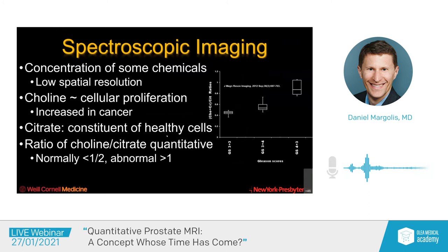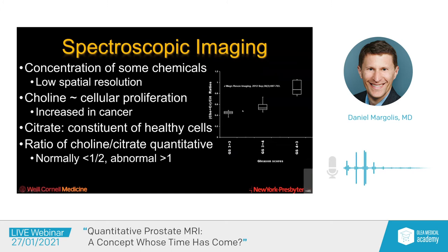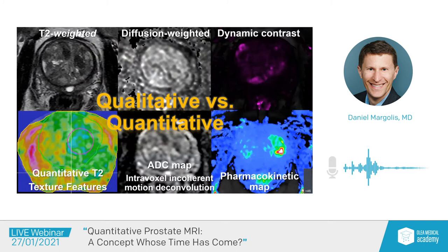Spectroscopic imaging is very technically demanding and very time demanding, so we generally dispense with it. The other advantage of quantifying this choline-to-citrate ratio is that it discriminates various grades of cancer. This publication is from nearly a decade ago by my colleagues when I was still at UCLA, and what you see is grade group one is significantly lower than grade group two and grade group three.